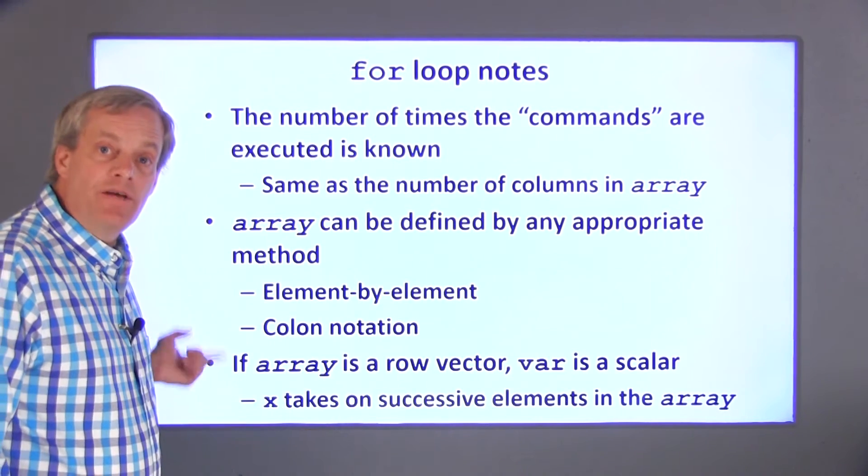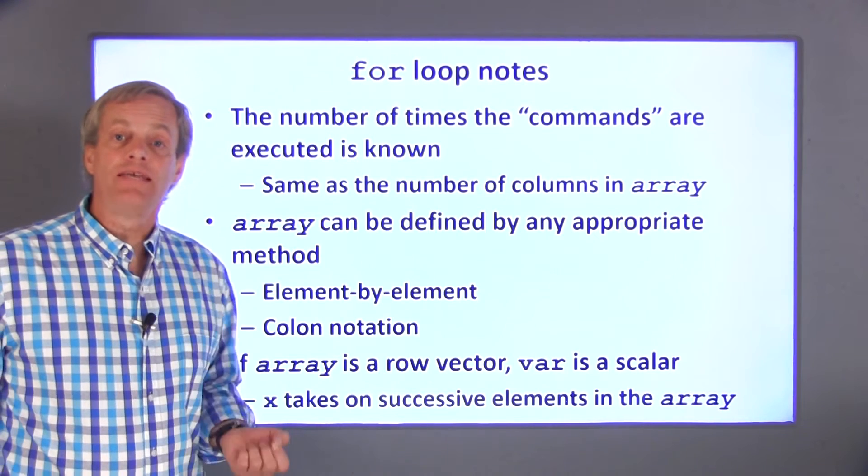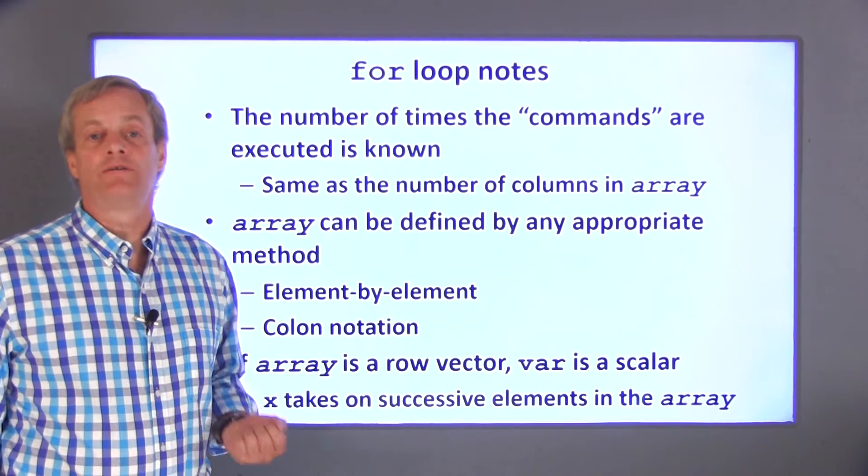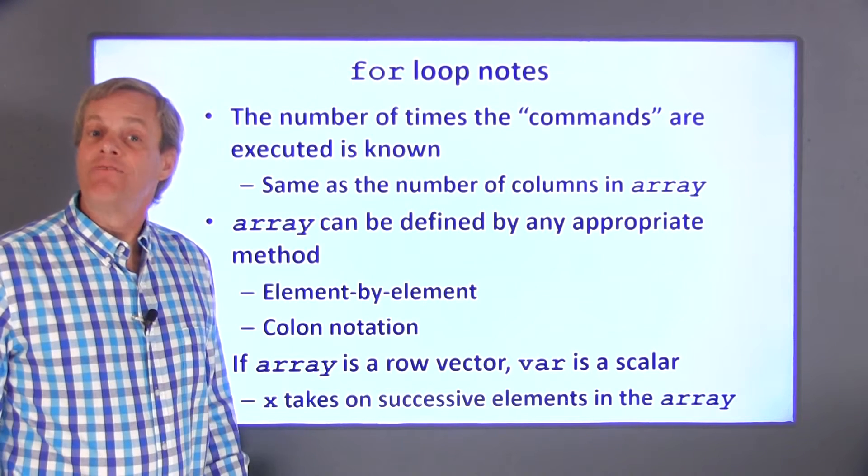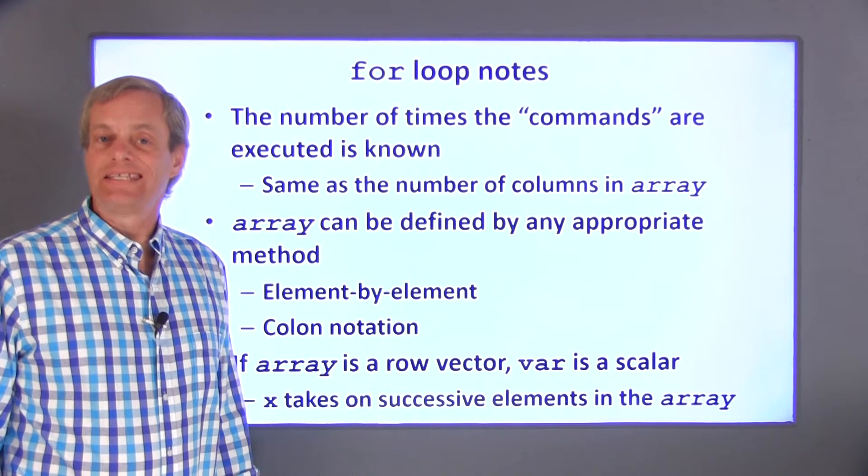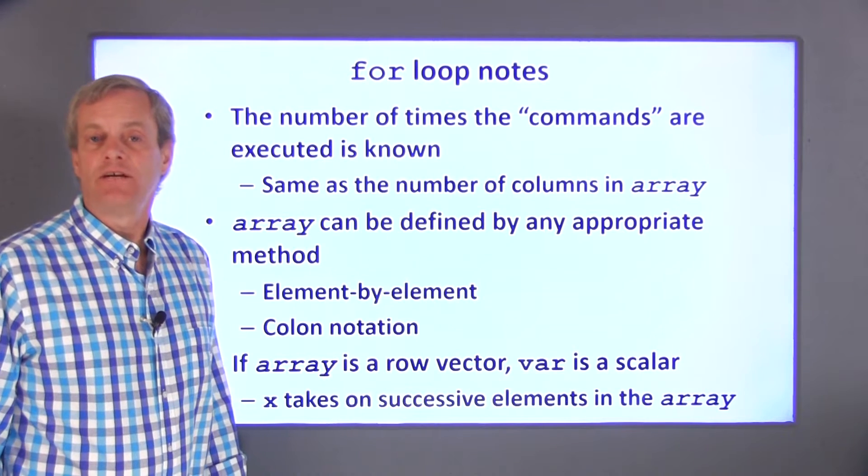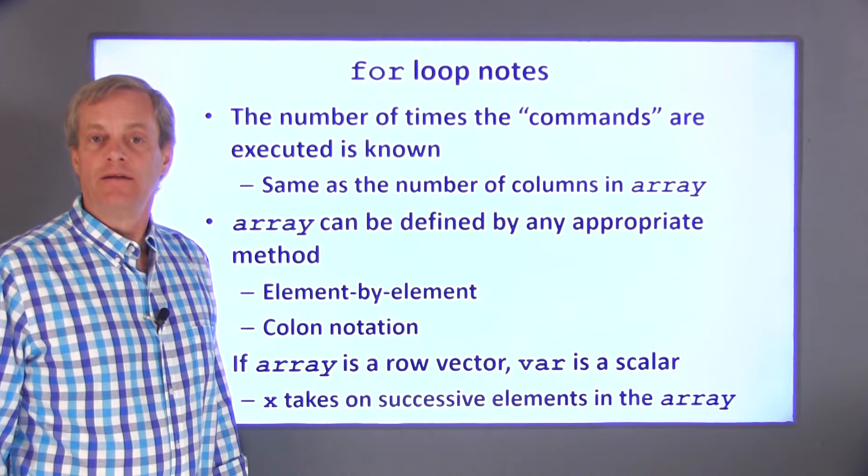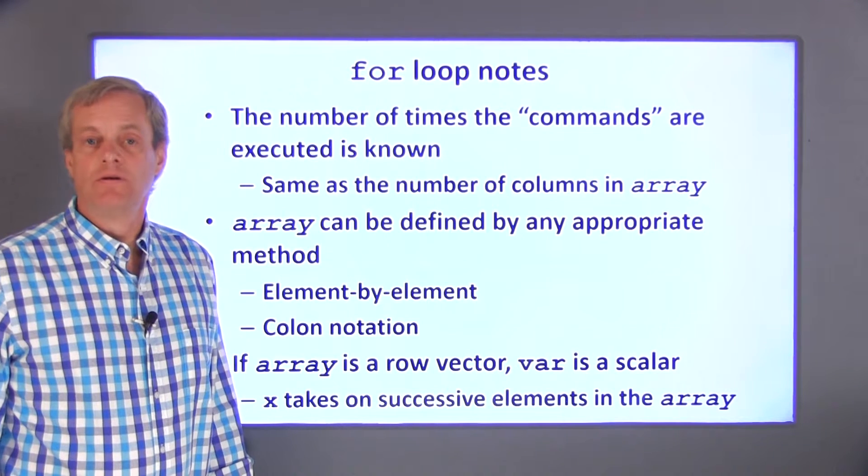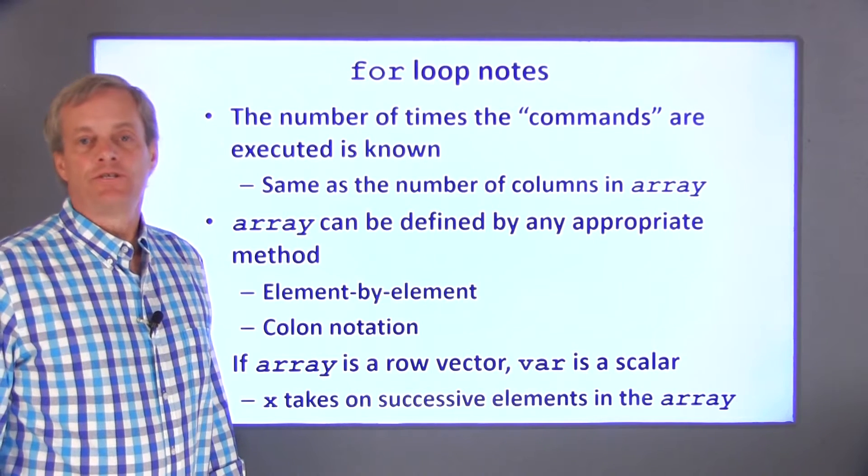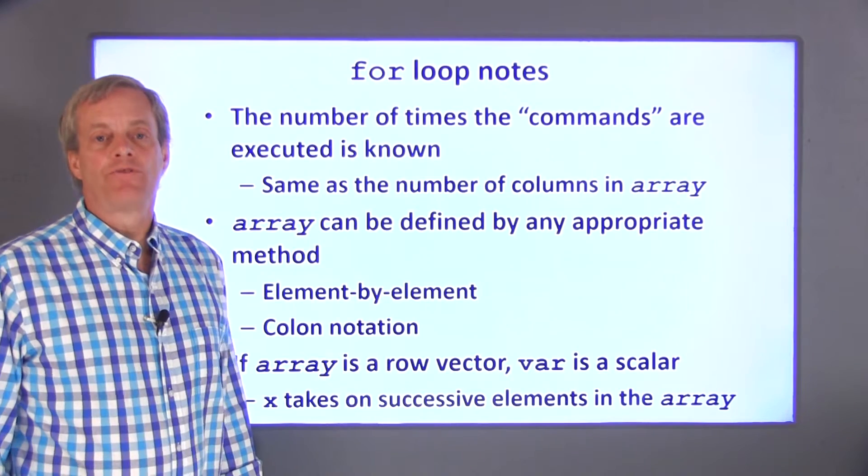Finally, as I mentioned before, for the special case in which the array in the for statement is a row vector, the commands are executed once for each element in the array, and the value of the variable var will be a scalar and will successively take on the individual values in the array. This will probably be the most common use of the for statement in this class. For loops are probably best understood by showing examples, so I'll go through a few next.